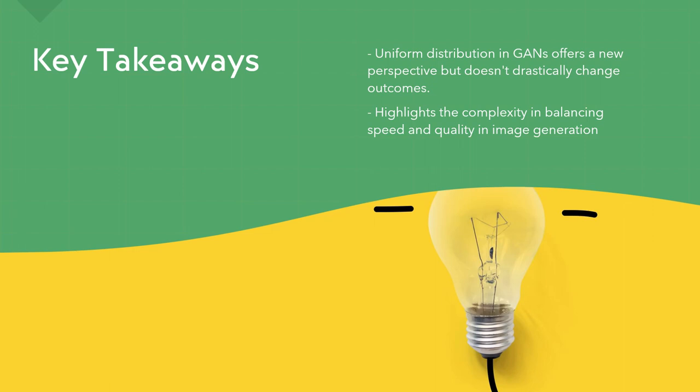The key takeaways from our study is that while the uniform distribution in GANs offers a new perspective on diffusion models, it doesn't drastically alter the outcomes. This highlights the complexity involved in balancing speed and quality in such a tough model as image generation.